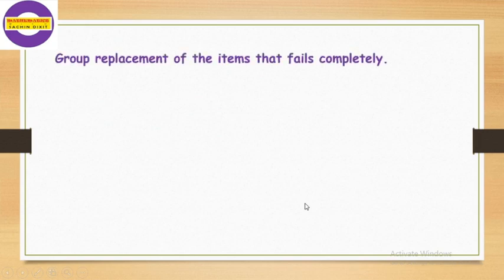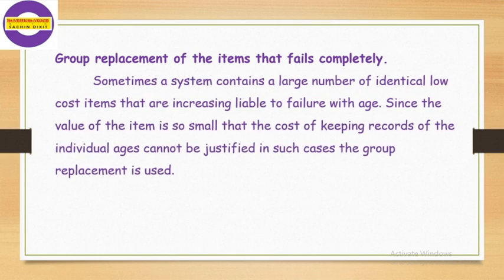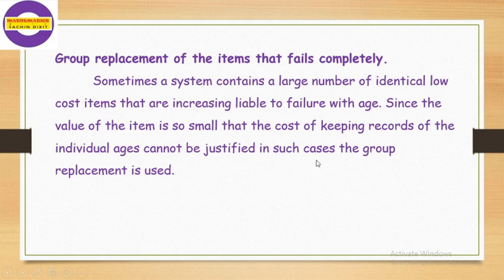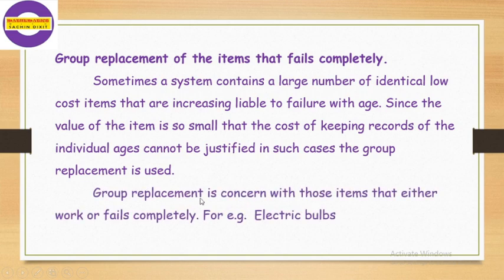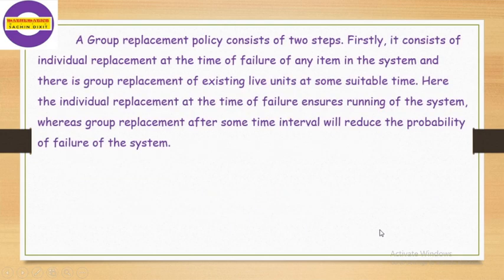Group replacement of items that fail completely. Sometimes a system contains a large number of identical low-cost items that are increasingly prone to failure with age. Since the value of each item is so small that the cost of keeping records of individual ages cannot be justified, in such cases group replacement is used. Group replacement is concerned with items that either work or fail completely — for example, electric bulbs. A group replacement policy consists of two steps.